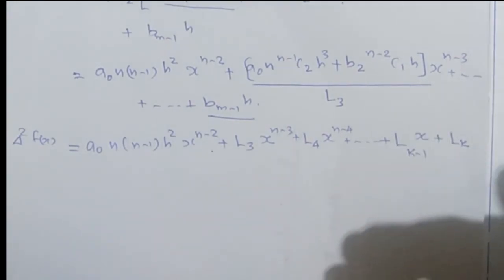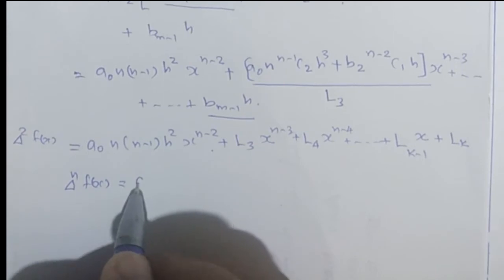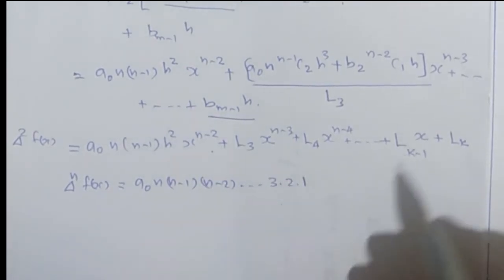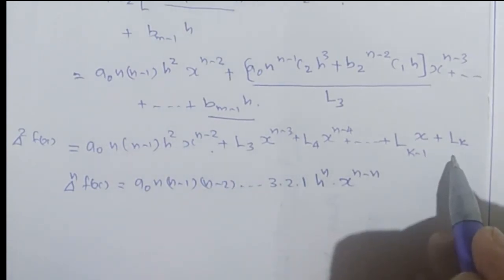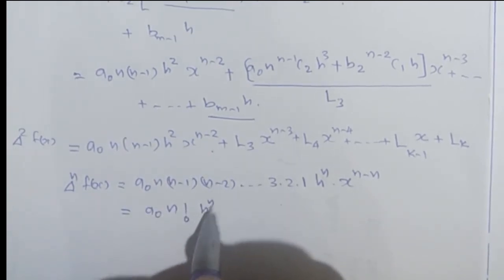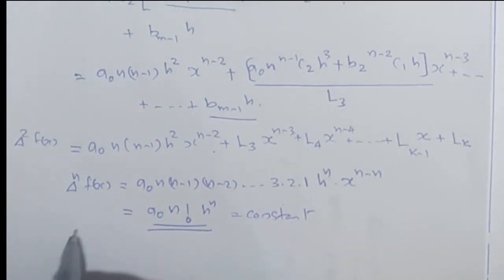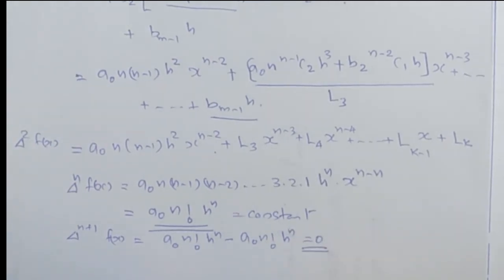Likewise, if we take the forward difference n times, following the same procedure, we get Δⁿf(x) = a0 · n(n-1)(n-2)···3·2·1 · h^n · x^(n-n), and all other terms vanish. This equals a0 · n! · h^n, which is a constant. Furthermore, the (n+1)th forward difference Δ^(n+1)f(x) = a0·n!·h^n - a0·n!·h^n = 0, which completes the proof of the theorem.